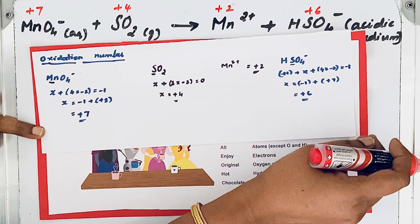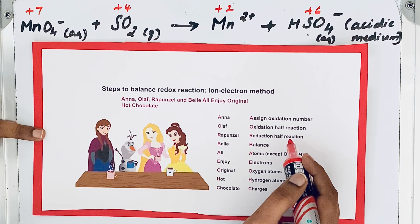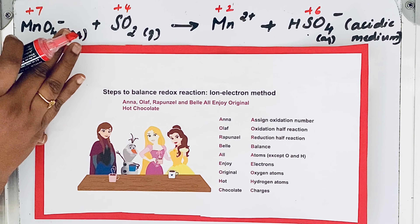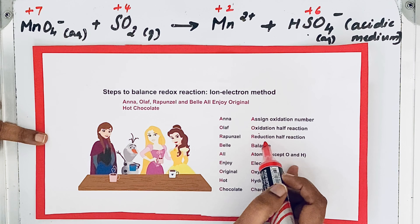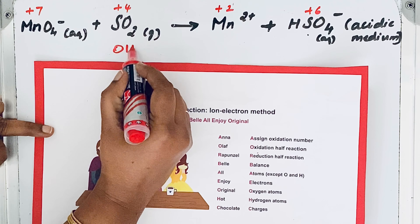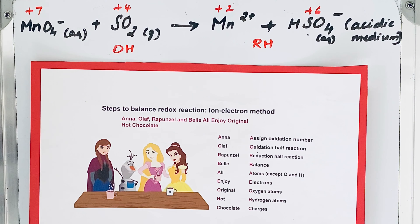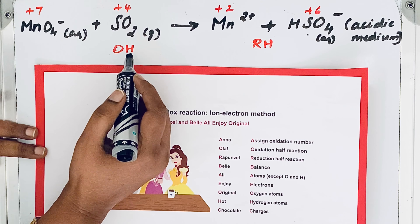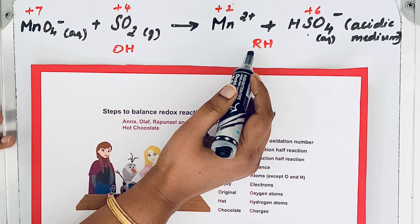Now we will move to the second step: writing the oxidation and reduction half reactions. We split this redox reaction into two half reactions — one is the oxidation half reaction and the other is the reduction half reaction. An increase in oxidation number is oxidation; a decrease in oxidation number is reduction.